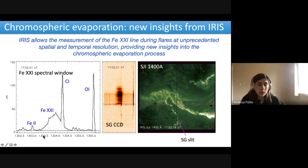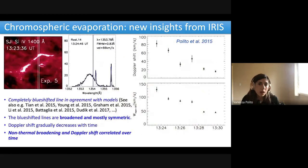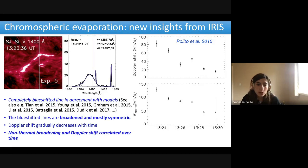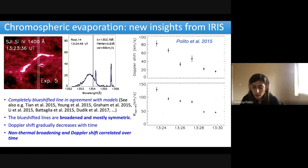The Fe XXI line is broad because it's a high-temperature line, in contrast to the narrow photospheric lines. Thanks to these observations, we have learned a lot about chromospheric evaporation. One key new insight from IRIS is that the Fe XXI lines are observed to be completely blue shifted in agreement with models — in contrast to EIS, which did not always observe this. The lines are observed to be completely blue shifted, broad, and mostly symmetric, fittable with a single Gaussian. The Doppler shift and broadening are also highly correlated over time — both gradually decreasing toward the peak of the flare — indicating that the process causing the broadening and the evaporation are related.